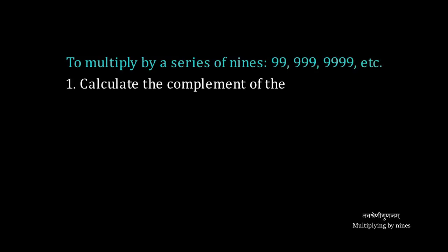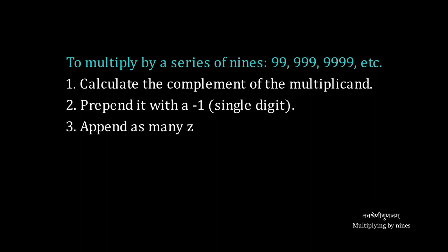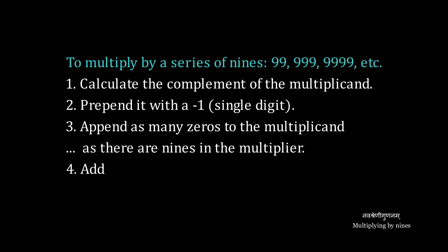To multiply a number by a series of nines, that is 99, 999, 9999, etc., first we calculate the complement of the multiplicand. That's the first number. We prepend it with a single negative one, append as many zeros to the multiplicand as there are nines in the multiplier, and then we add with the result of step two.